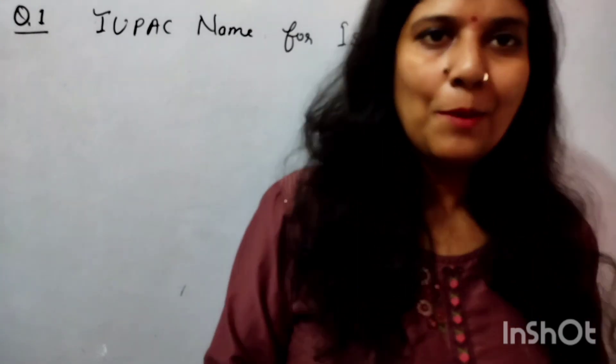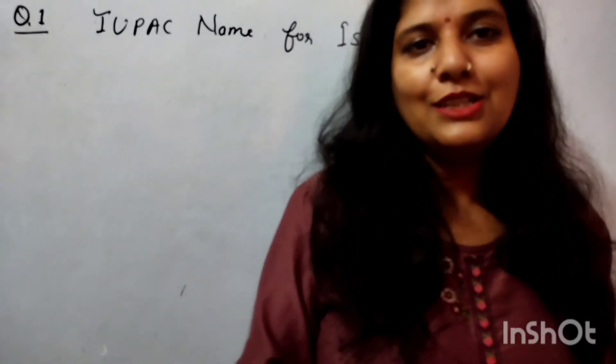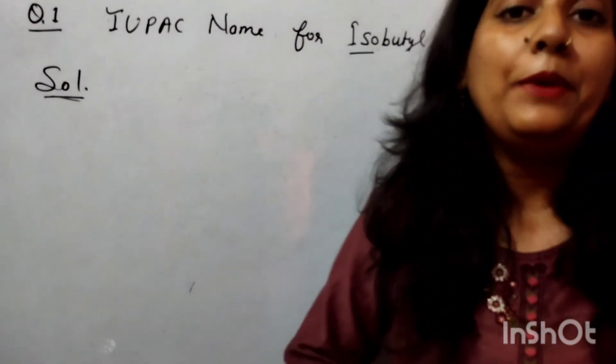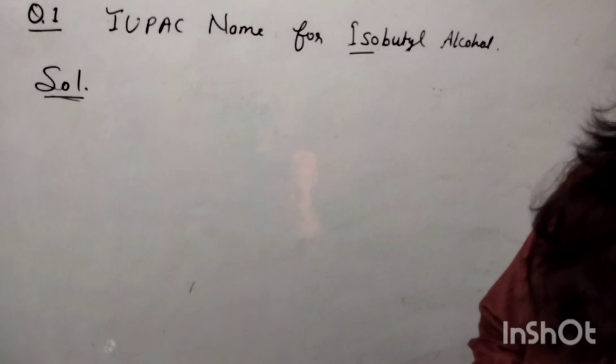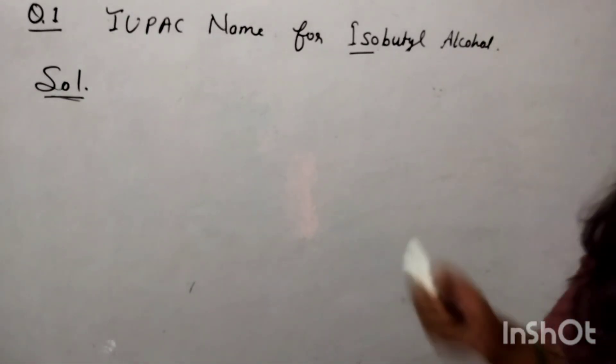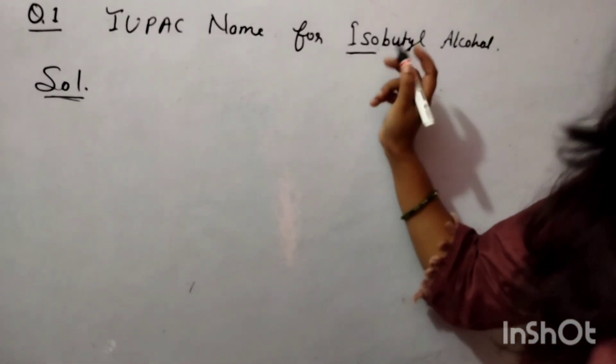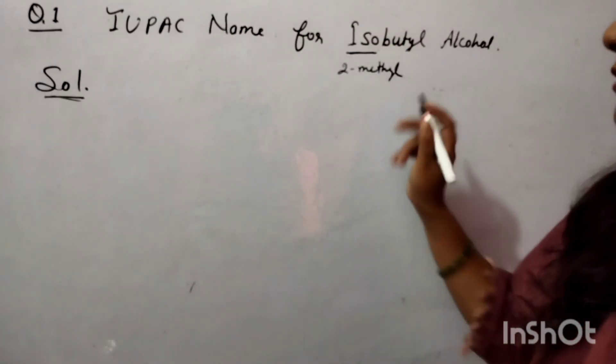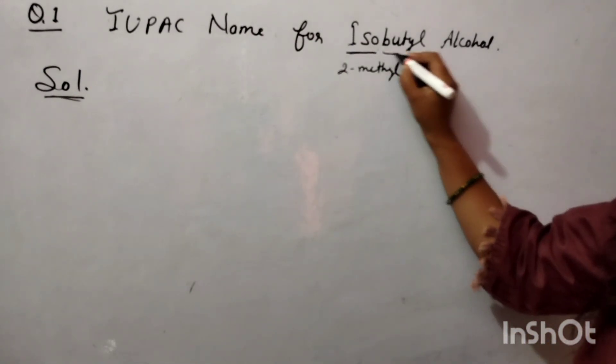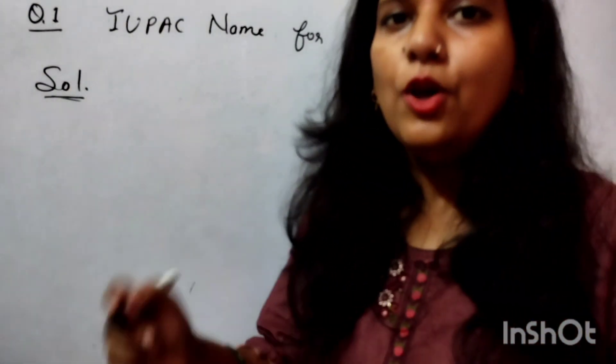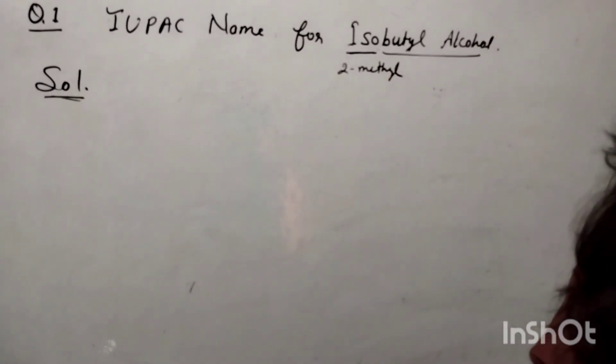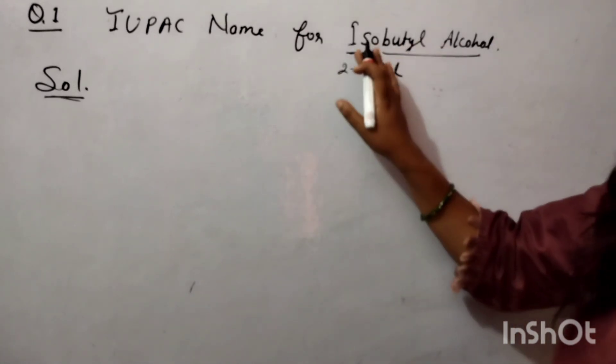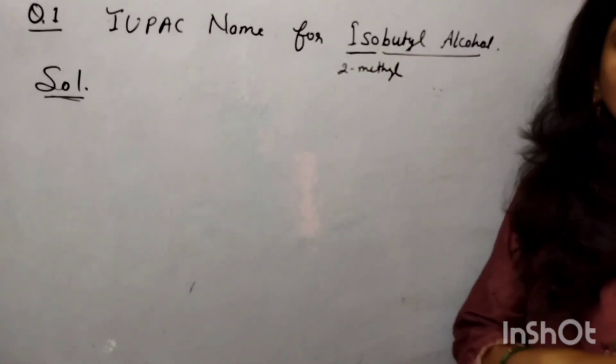If yes, then comment. If no, then continue with my video. The IUPAC name for isobutyl alcohol can be given using a simple technique. Whenever you have an iso group, you have to write essentially 2-methyl. So you have to draw butanol, as you know it is a butyl alcohol. Draw a 4-carbon series with a functional group OH.